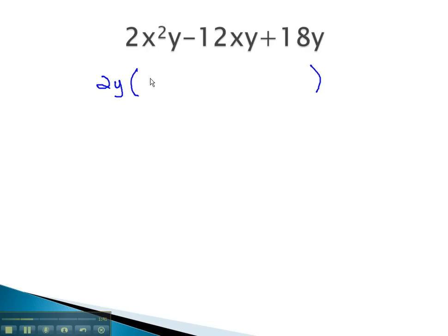Factoring out the 2y leaves us with x² minus 6x plus 9. We now have a trinomial inside the parentheses left to factor.